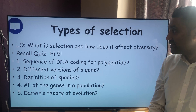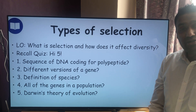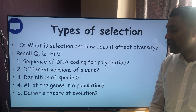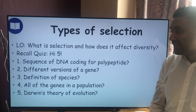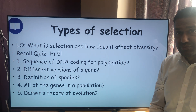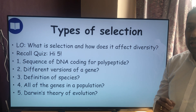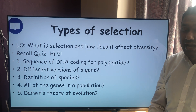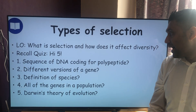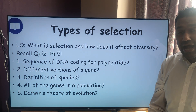If you've had a go at that: number one, a sequence of DNA coding for a polypeptide is a gene. Number two, different versions of a gene — we call them an allele, spelled A-L-L-E-L-E-S. Number three, the definition of a species is a group of organisms with similar features; the important part is that they are able to breed to produce living fertile offspring. Number four, all of the genes in a population — that was last lesson's title — is genetic diversity, also called the gene pool.